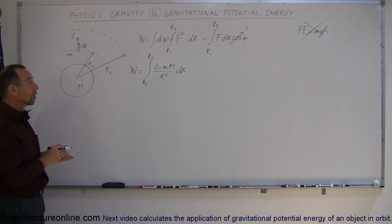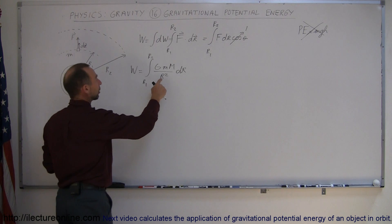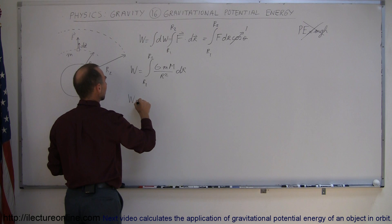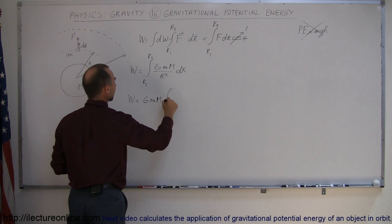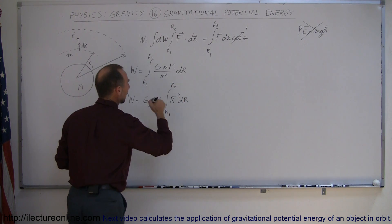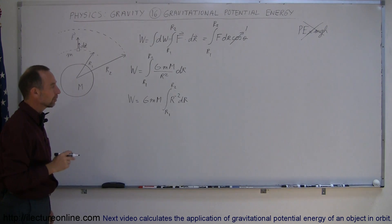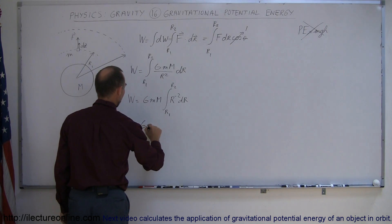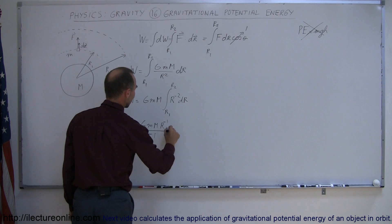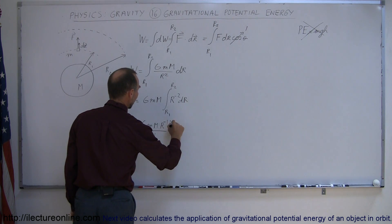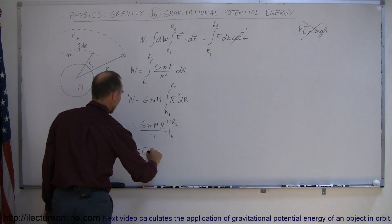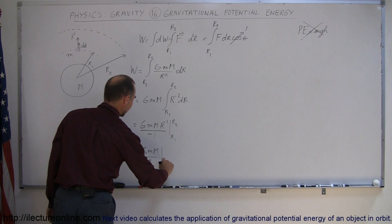G, m, and big M are all constants — they can come outside the integral — and R squared in the denominator moves to the numerator as R to the minus 2. So the work done equals G·m·M times the integral of R to the minus 2 dR from r1 to r2. Integrating that, the integral of R to the minus 2 is R to the minus 1 divided by negative 1, giving G·m·M times R to the minus 1 over negative 1, evaluated from r1 to r2.